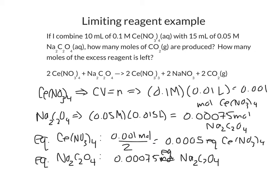The thing to notice is that we have fewer equivalents of cerium nitrate than we do of sodium oxalate. This reaction requires 2 cerium nitrates for every sodium oxalate. If we had just looked at the number of moles available, we would have said the sodium oxalate is limiting — but that doesn't take into account the stoichiometry. Once we calculate equivalents, we can see that cerium nitrate is actually the limiting reagent (LR) in this reaction.